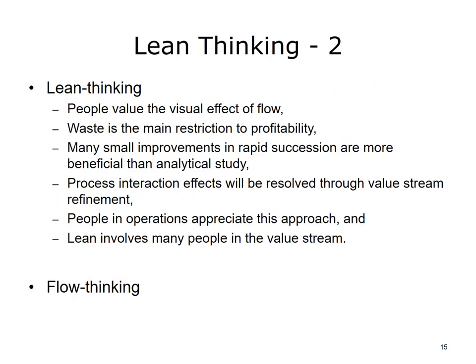Implementation requires a commitment and support by management and participation of all personnel within an organization to be successful. Assumptions underlying Lean thinking are: people value the visual effect of flow; waste is the main restriction to profitability; many small improvements in rapid succession are more beneficial than analytical study; process interaction effects will be resolved through value stream refinement; Lean involves many people in the value stream; and transitioning to flow thinking causes vast changes in how people perceive their roles in the organization.